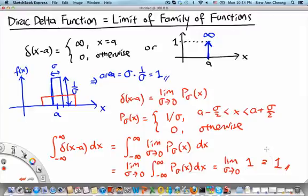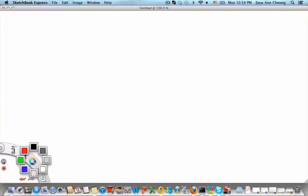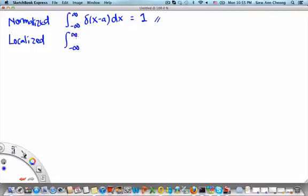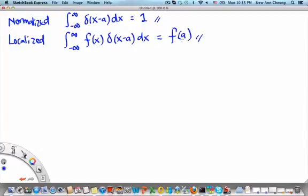The other important property of the Dirac delta function is localization. We have seen that the Dirac delta is normalized: ∫_{−∞}^{∞} δ(x − a) dx = 1. The localization property states that ∫_{−∞}^{∞} f(x) δ(x − a) dx = f(a), meaning the Dirac delta function localizes the value of an arbitrary function f at the point a.